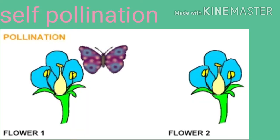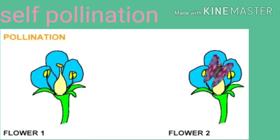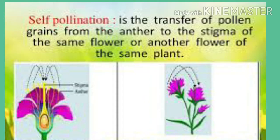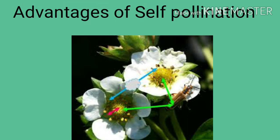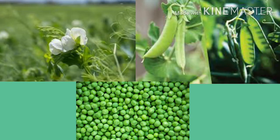The transfer of pollen grains from the anther of a flower to the stigma of the same flower or another flower of the same plant is known as self-pollination. Advantages of self-pollination: chances of pollination are more.